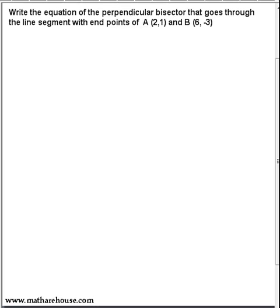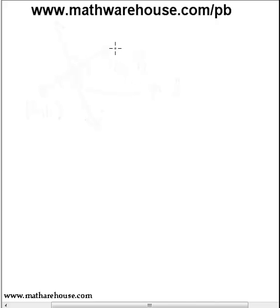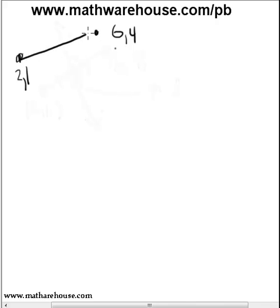Before we try to answer questions on perpendicular bisectors, let's talk about what a perpendicular bisector actually is. If we have a segment — say from point (2, 1) to point (6, 4) — we want a line that cuts it perfectly in half. This half will equal that half; in other words, the original segment will be bisected. And the new line will be perpendicular to the original segment.